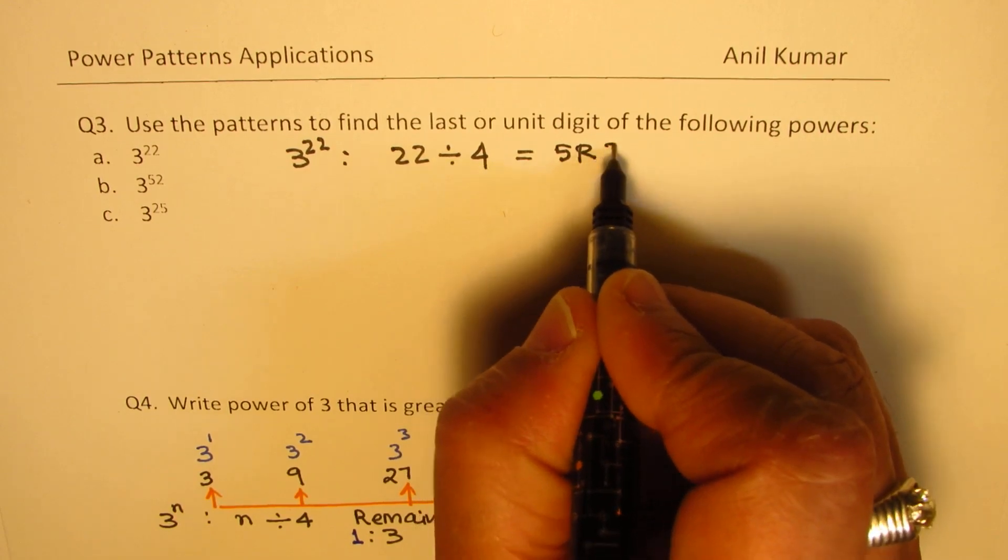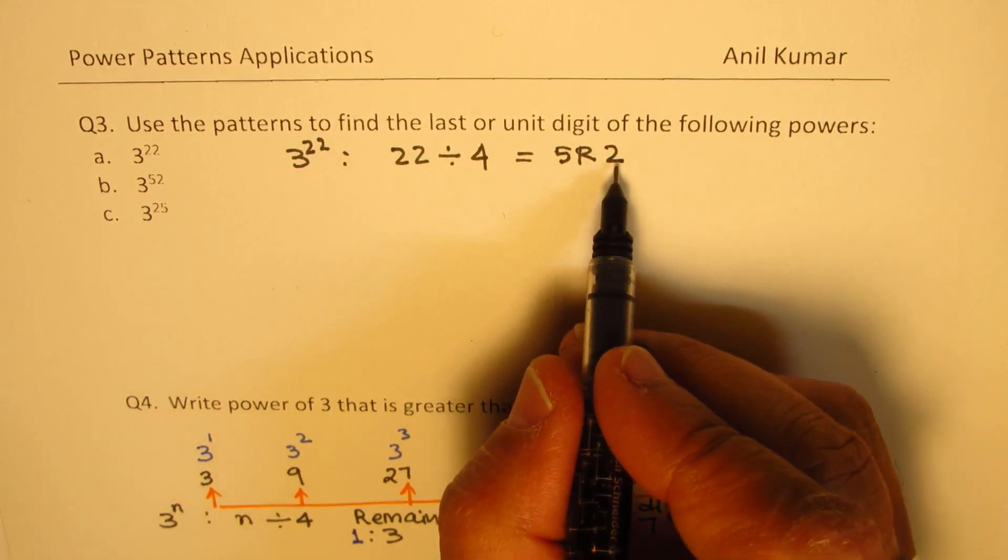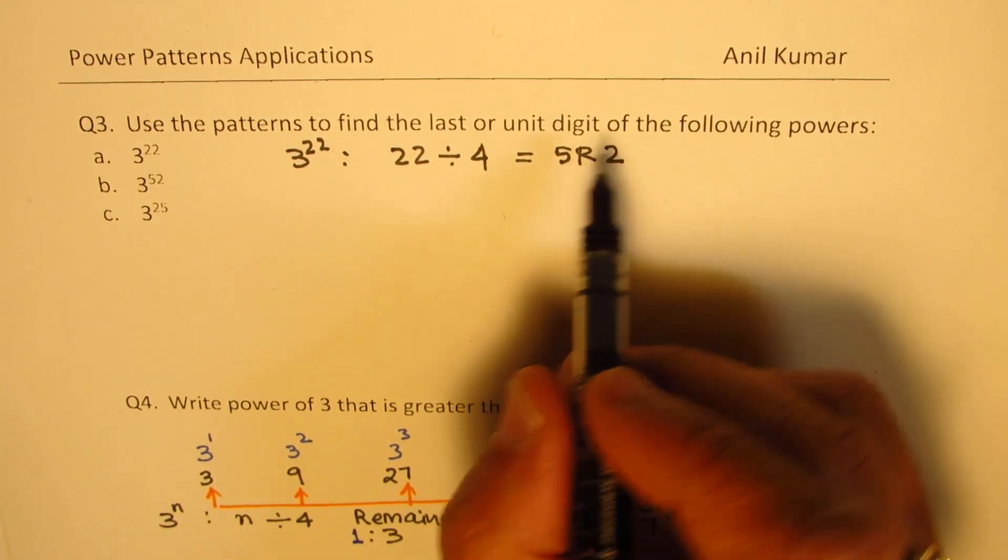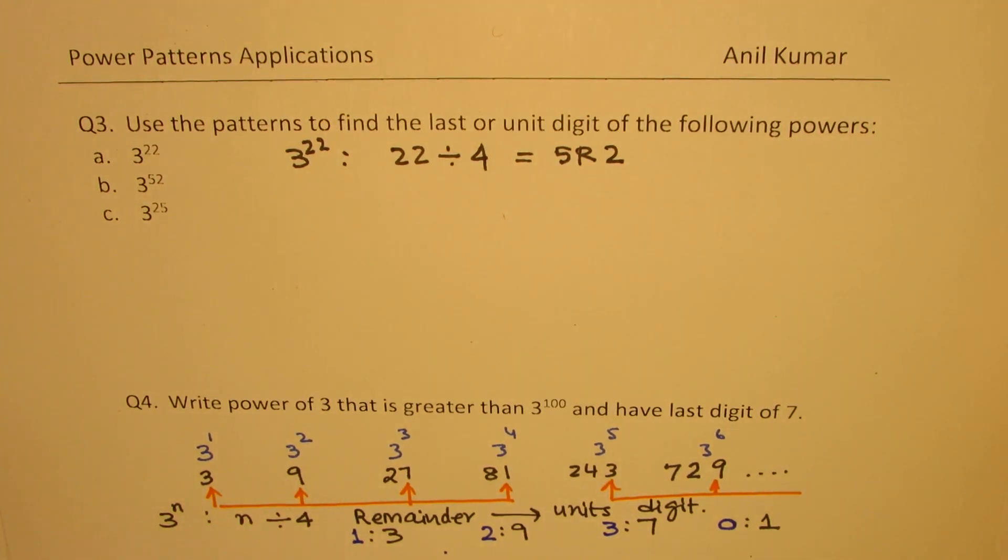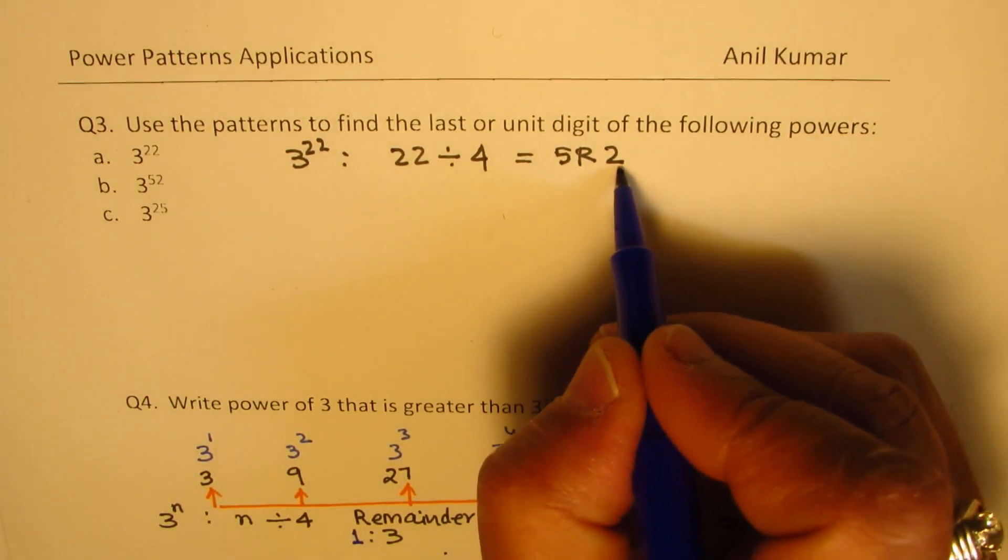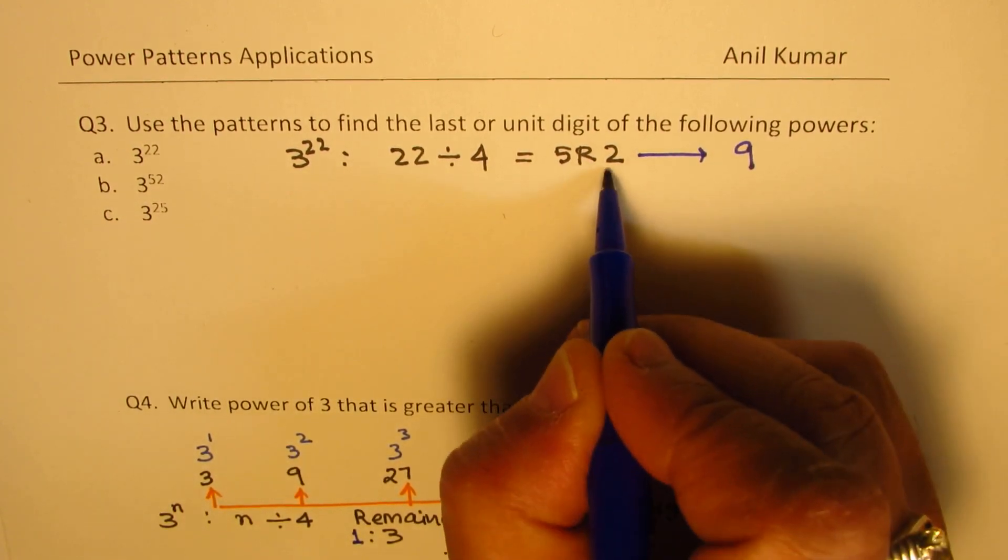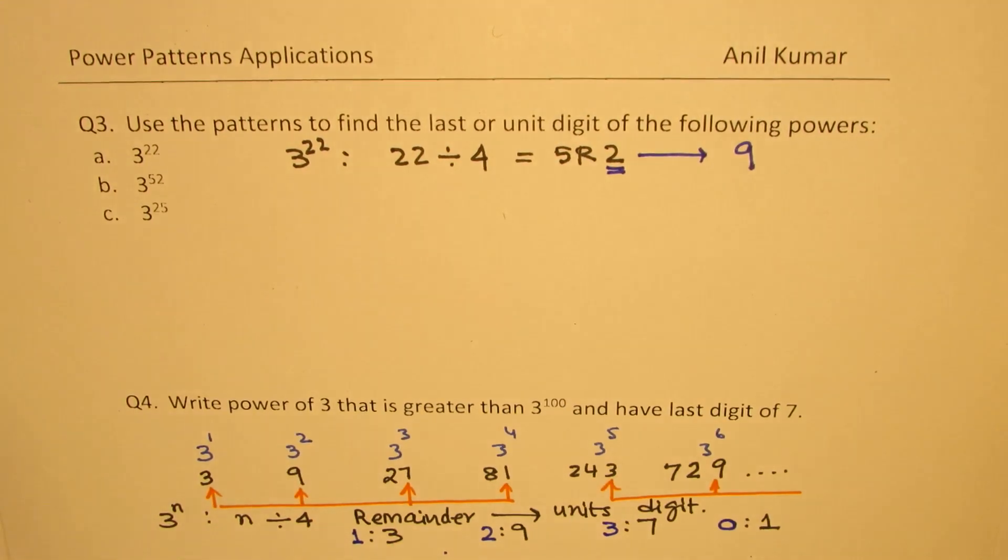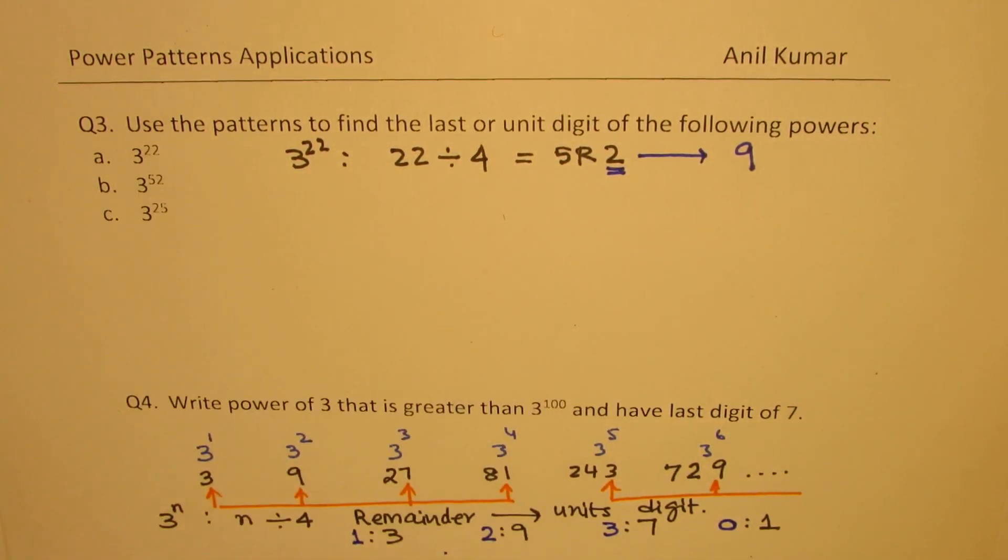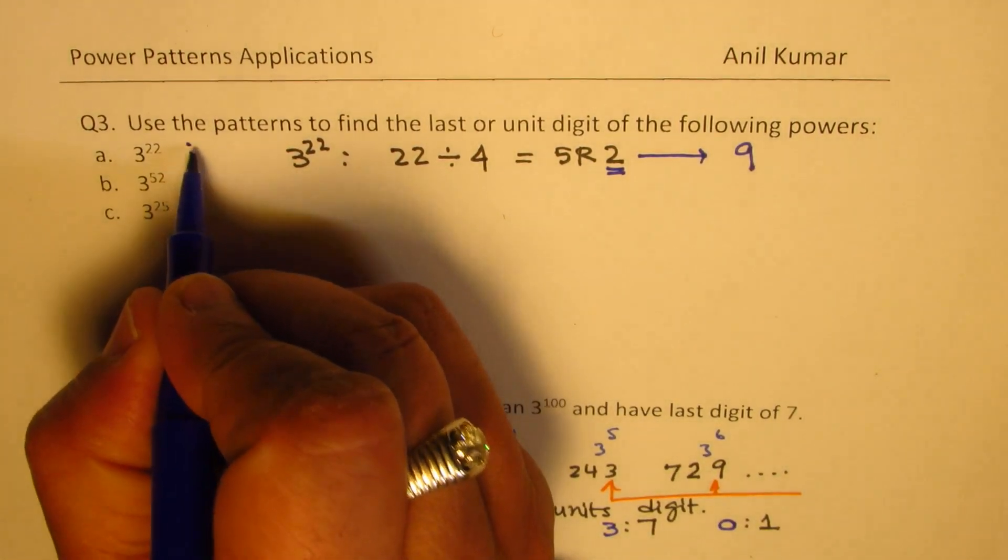Now, since the remainder is 2, what is the unit's place? Well, if the remainder is 2, the unit's place is 9. So, this corresponds to unit's place of 9. Clear? That number, 2, corresponds to unit's place of 9. So, we get our answer here. And that is going to be 9 for the first case.